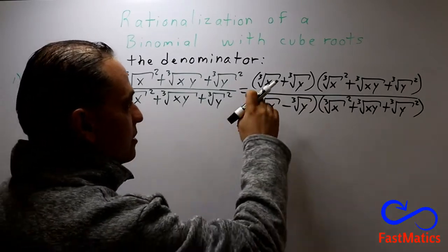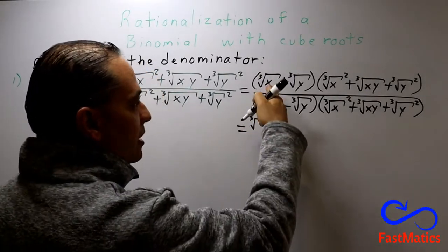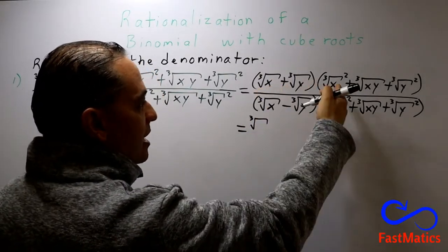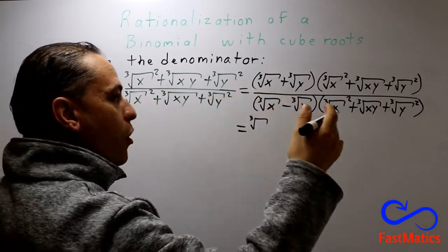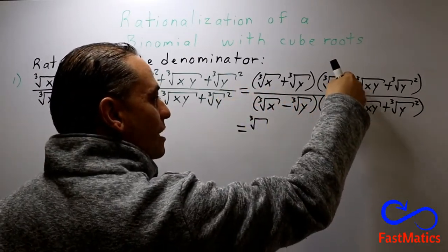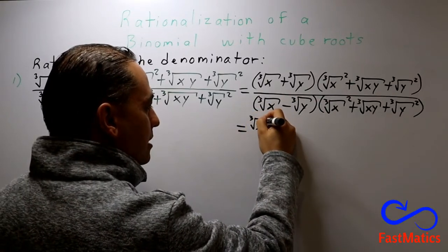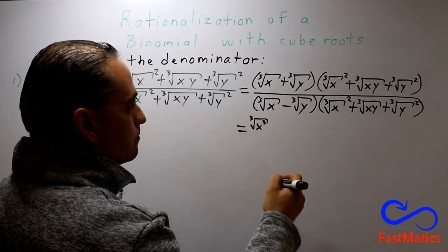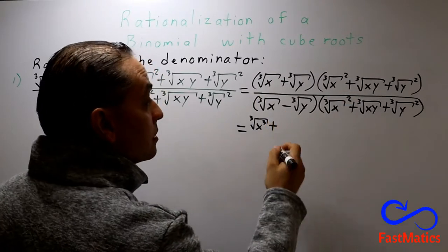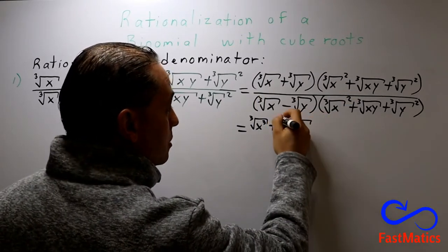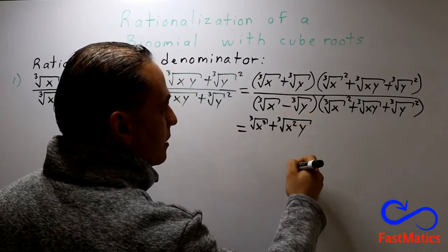So, we do that. The first times the first is the cube root of x times x squared. Because if you remember the laws of exponents, the exponent can be inside the root — so that gives us x cubed. After that, the first times the second is plus the cube root of x squared y.